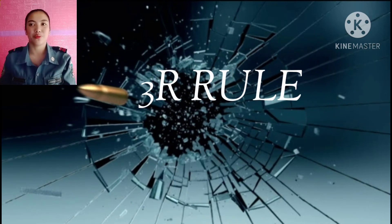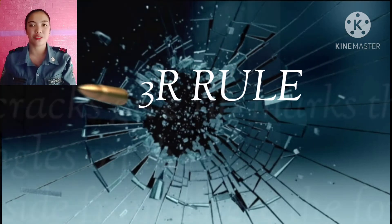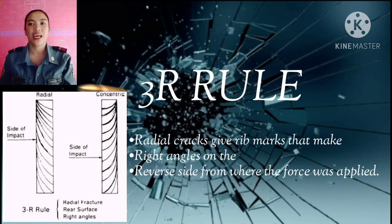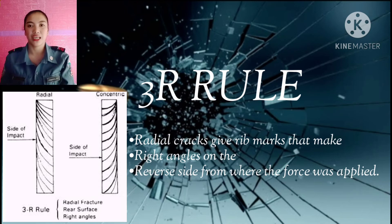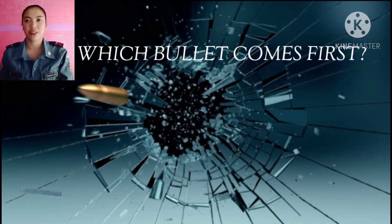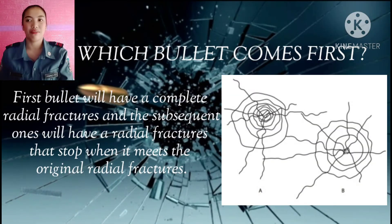Another way to determine where the bullet came from is through the 3R rule. The edges of broken pieces of glass will show a rib of stress marks. Radial cracks give rib marks that form right angles on the reverse side from where the force was applied. Regarding which bullet comes first: the first bullet will have a complete radial fracture, and subsequent ones will have radial fractures that stop when they meet the original radial fractures.